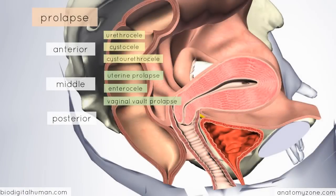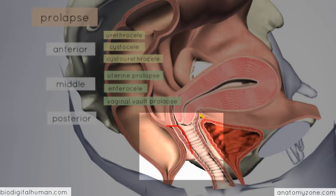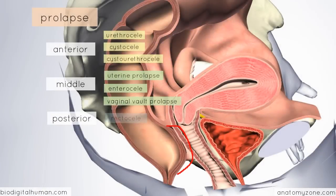Finally, in the posterior compartment, the rectum can protrude forwards into the posterior wall of the vagina, and this is called a rectocele.